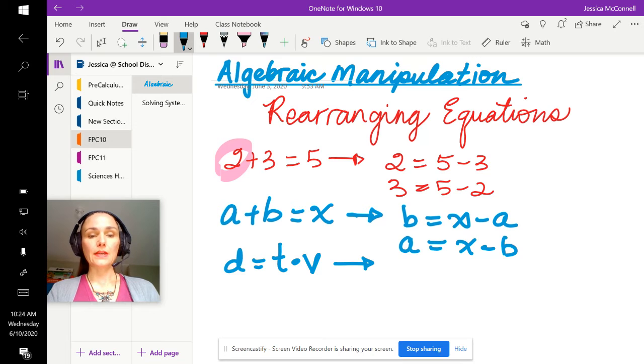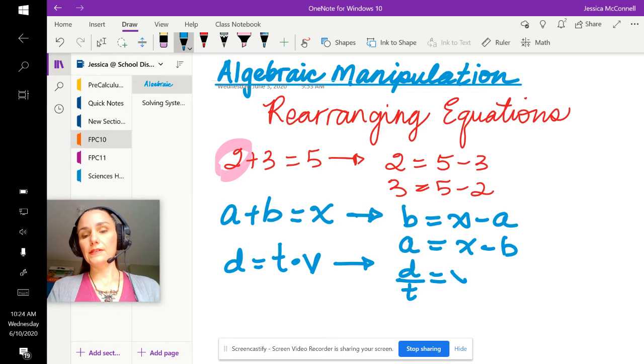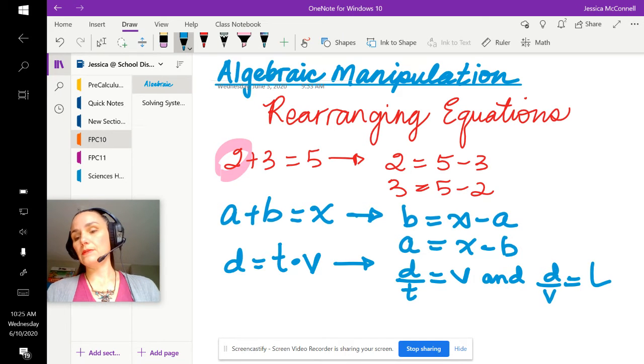Given that relationship exists, I can write two other statements. I can divide the t over to the left and find a statement for velocity where v is isolated. And the second one is I could divide velocity over to the left to find a statement where time is isolated. So depending on the problem that you're solving, you may use any one of these three forms, and they all come one from the other.